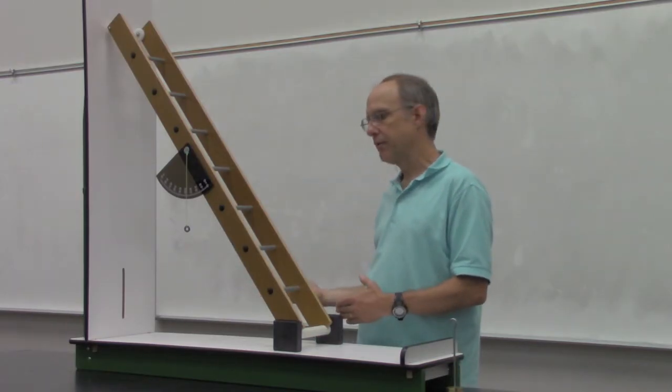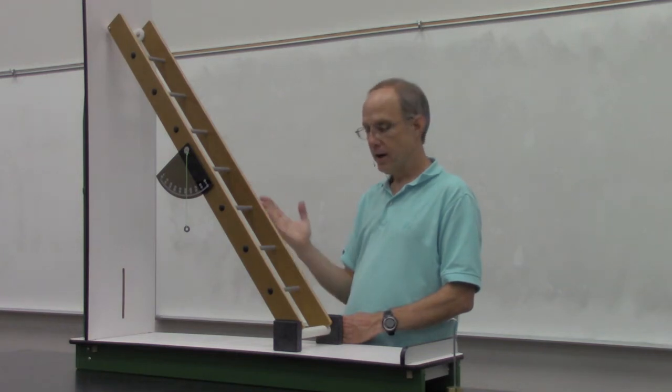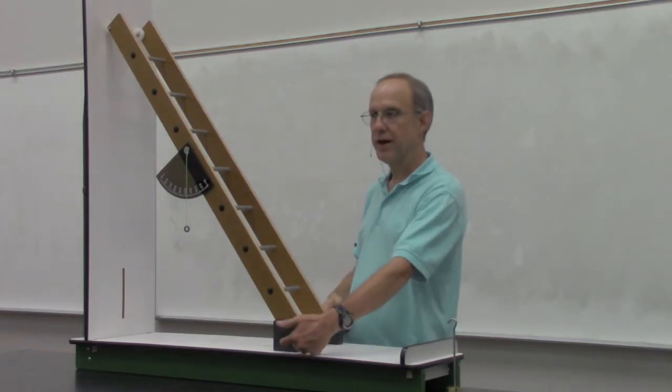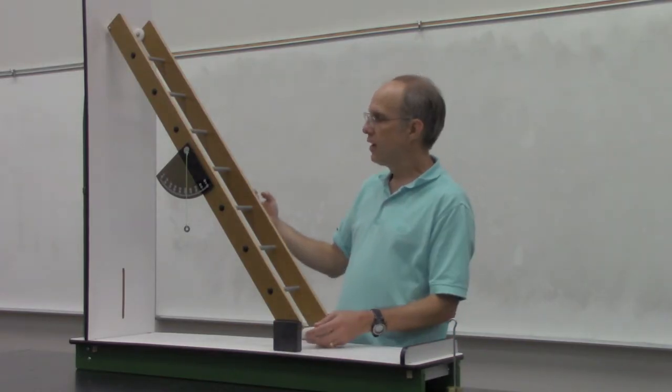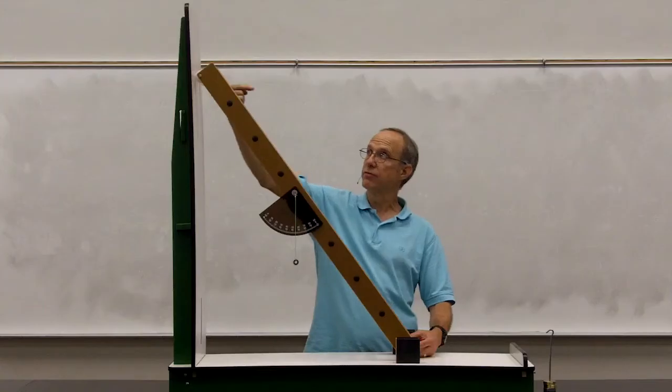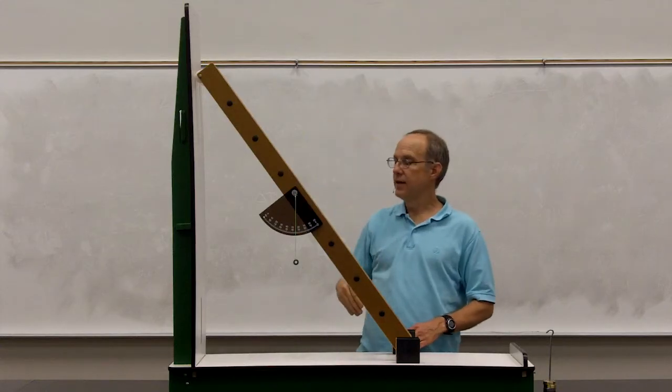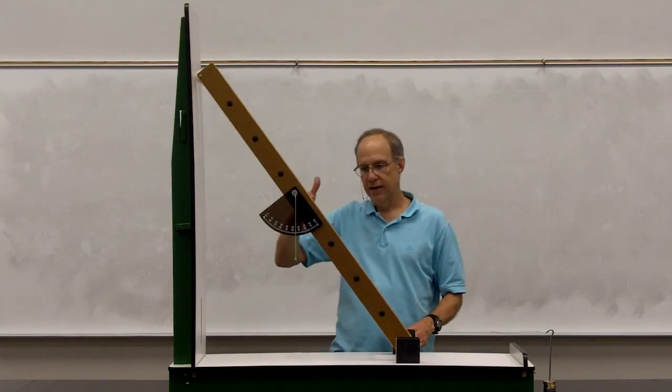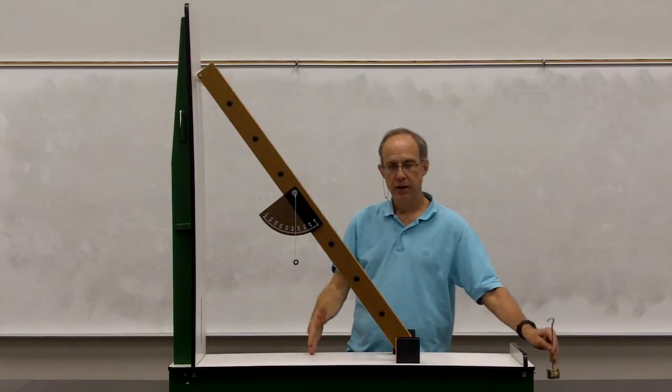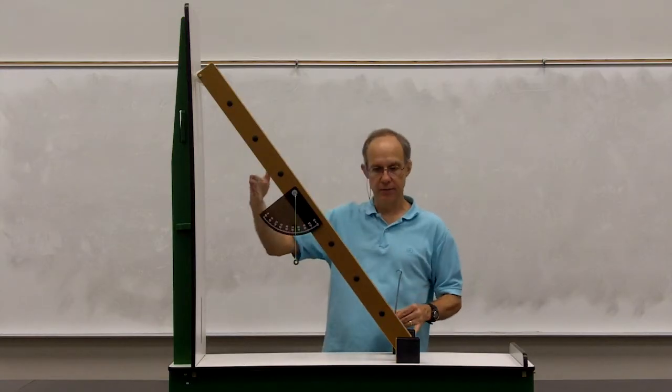For static equilibrium condition for an extended object, we also would have to have that the torque about any point would also be zero. In particular, if we choose down here at the base, then the torque would be provided in a clockwise direction from the normal force and this height, and the torque in the counterclockwise direction would be provided by the weight times this lever arm, plus the weight of the person standing on the ladder times their lever arm.